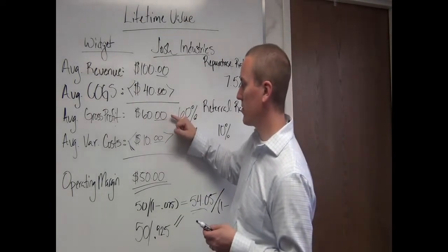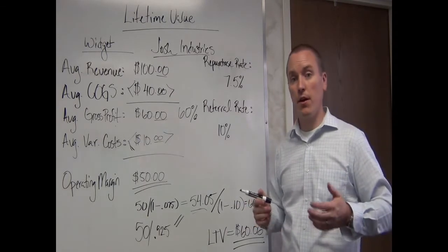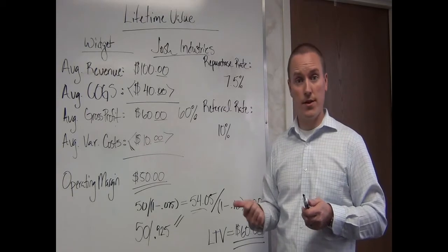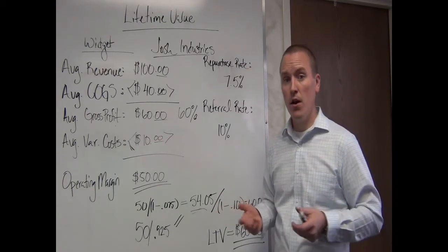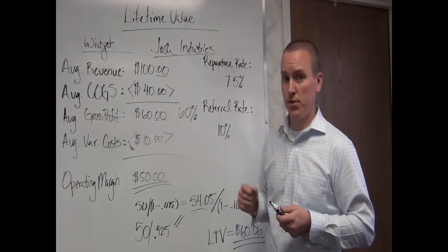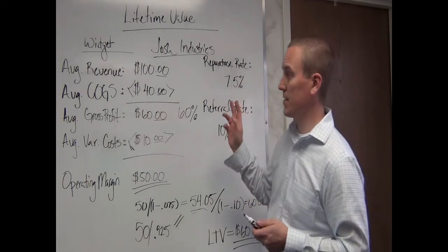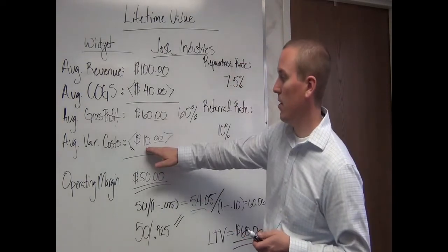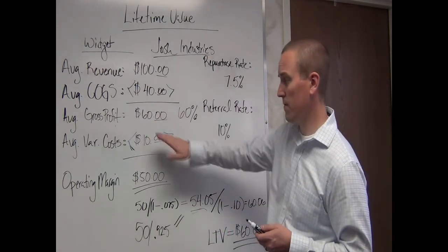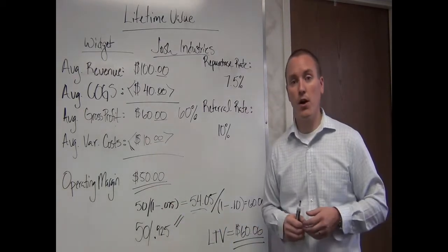From the $60, I'm going to subtract my average variable costs. Variable costs are any costs that vary or increase every time I sell a widget — so I wouldn't include rent or utilities, but I would include manpower. Say I have a guy in logistics doing shipping and fulfillment, and every time we sell a widget it takes him an hour, and I pay him $10 an hour — that's $10 per widget. Subtracting that from my average gross profit gives me $50, which is my operating margin.